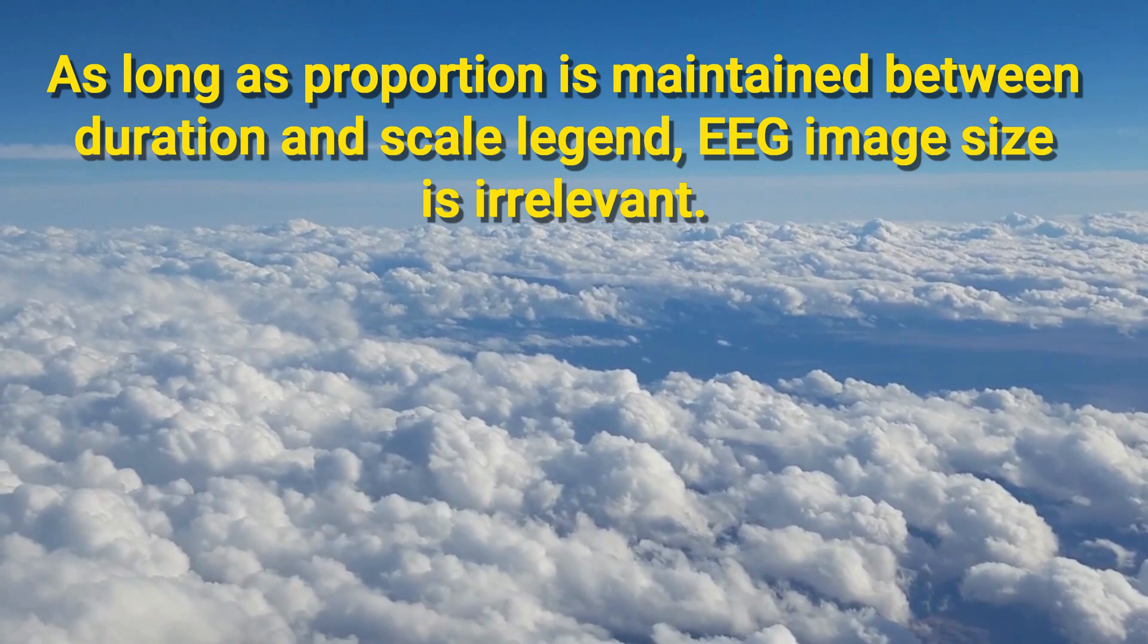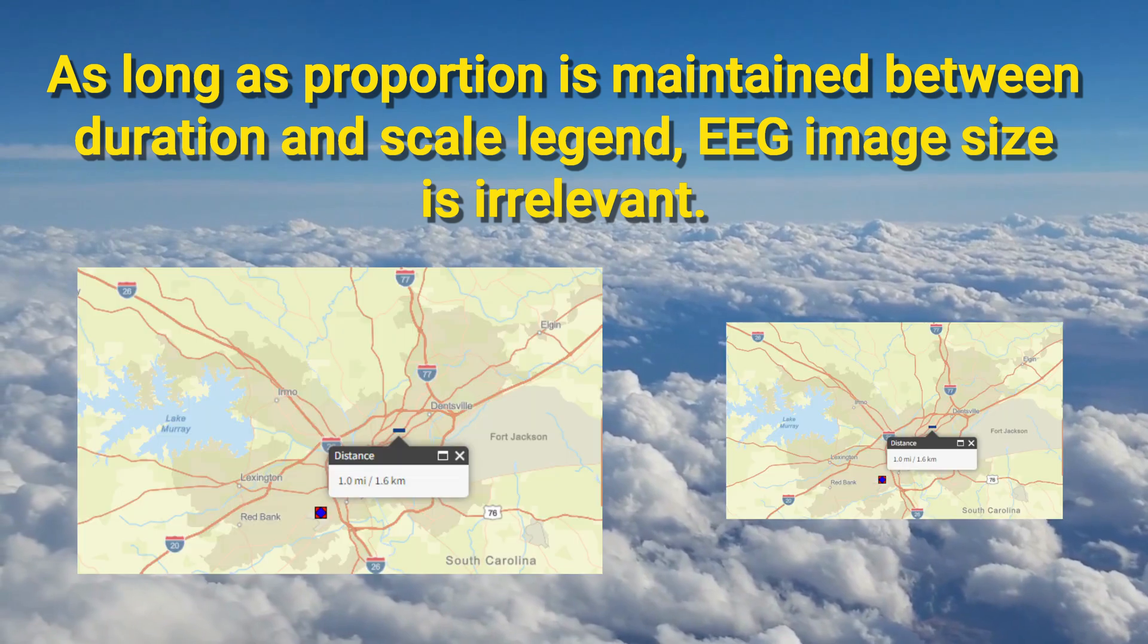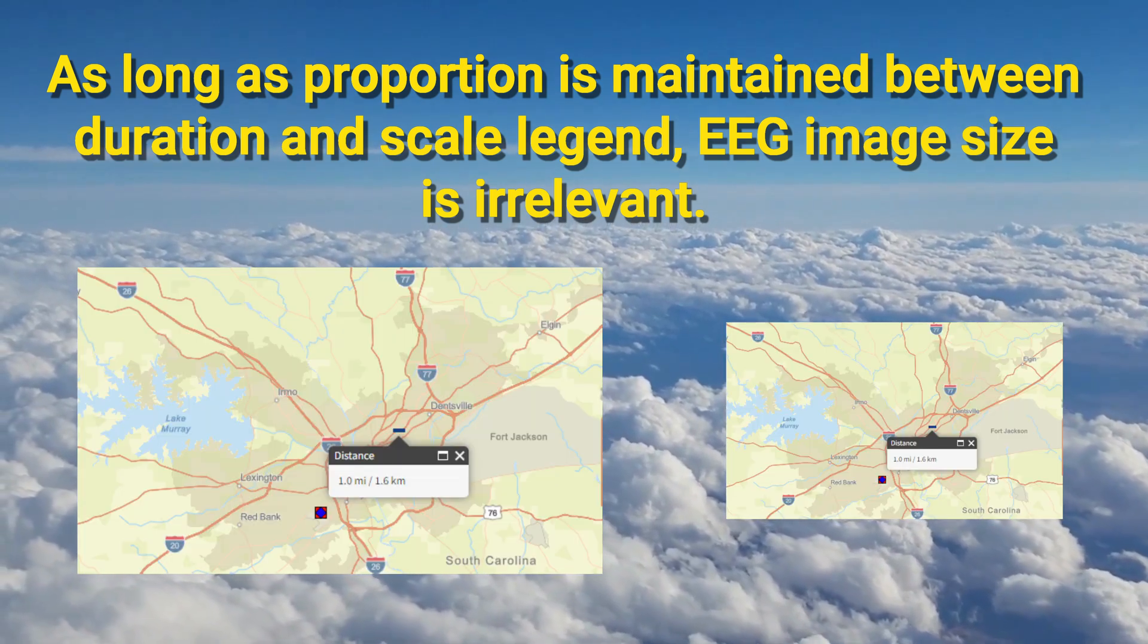You can change the size of that as long as the proportion stays the same. That is, the width and the height, the ratio of those to each other stays the same. If you reduce the size of an EEG image, yes, the scale legend is going to be less width and less height, but the wave you're measuring is proportionally going to be less.